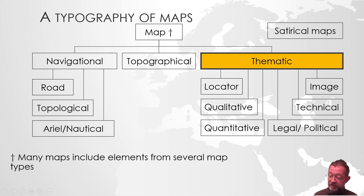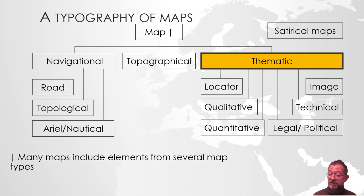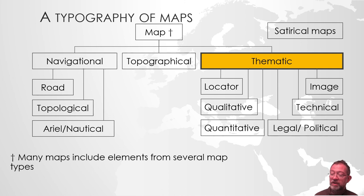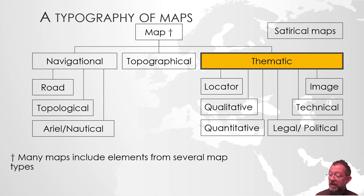We have both qualitative and quantitative thematic maps. Maps of feelings or fear might be a classical qualitative map, while statistical maps are classical quantitative maps. We also have image maps — using Woodward's definition, a satellite image, aerial photograph, or orthophoto might be considered a map. Technical maps are similar to topographical maps but typically at large scale, showing sewer networks or electrical networks. And then we have legal, political, planning, and cadastral maps. Those are the main types of thematic maps, and probably the maps most people create themselves.